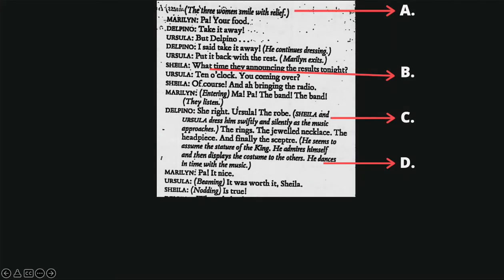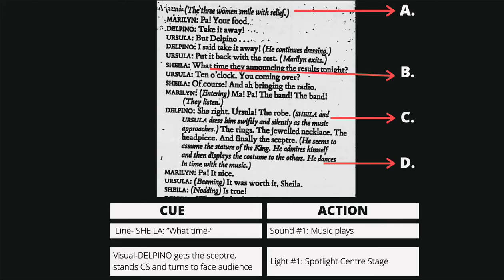Looking at the script from that scene, the cues that appeared were: first, music playing when Sheila said 'what time' — a sound cue triggered by that line. Second, a spotlight coming up center stage when Del Pino danced center stage — a lighting cue triggered by that movement. Those were the moments when the cues should be triggered, i.e., when you say go.